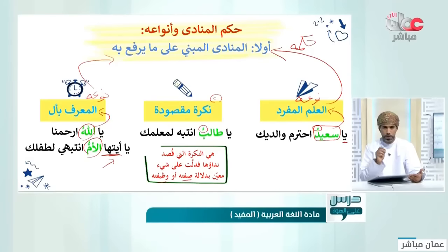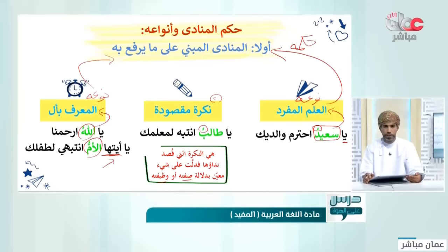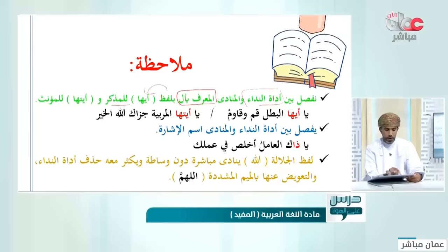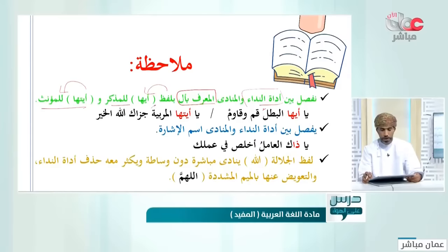النفس مؤنثة فنقول 'أيتها النفس'، والإنسان مذكر فنقول 'أيها الإنسان'. لفظ الجلالة 'الله' لا يدخل في هذه القاعدة، وإنما ينادى لفظ الجلالة مباشرة. ملاحظات على المنادى المبني: أولاً نفصل بين أداة النداء والمنادى المعرف بأل بلفظ 'أيها' للمذكر و'أيتها' للمؤنث. مثال: يا أيها البطل قم وقاوم، ويا أيتها المربية جزاك الله الخير.